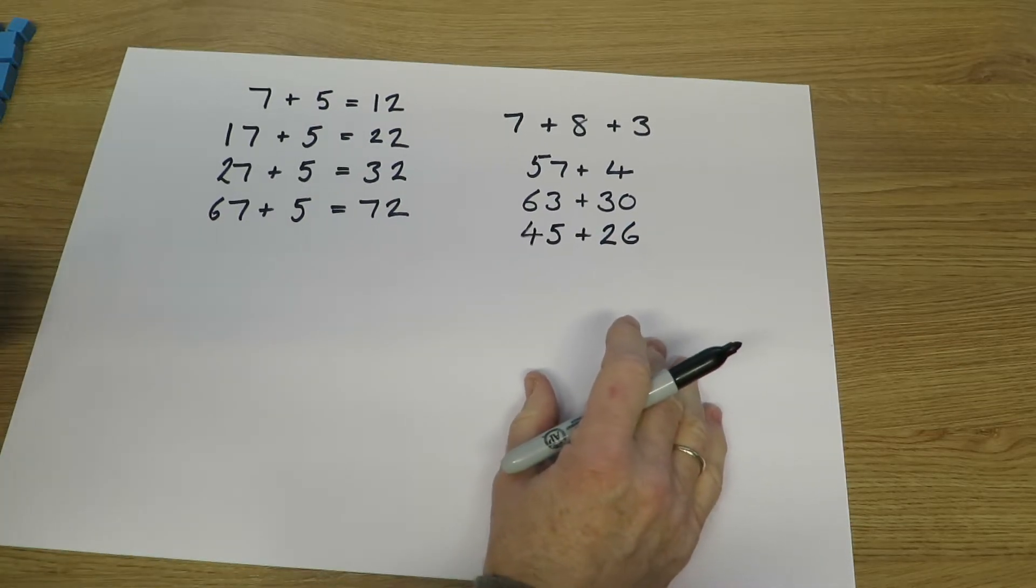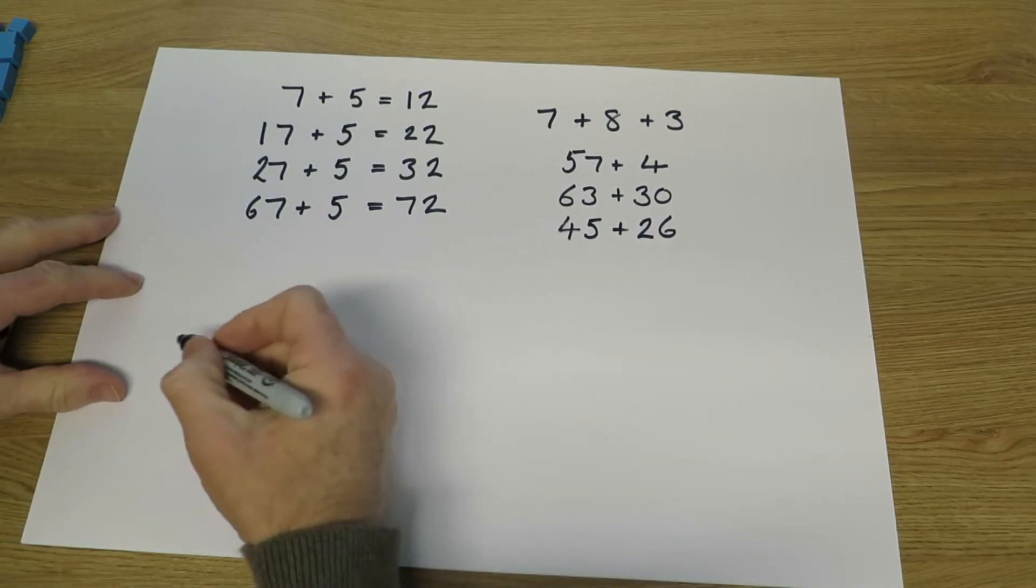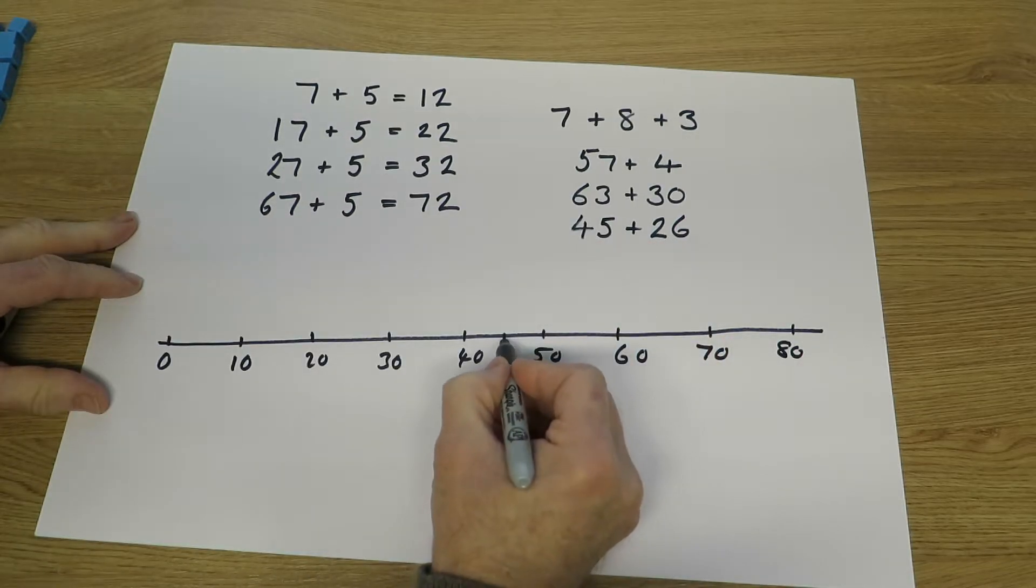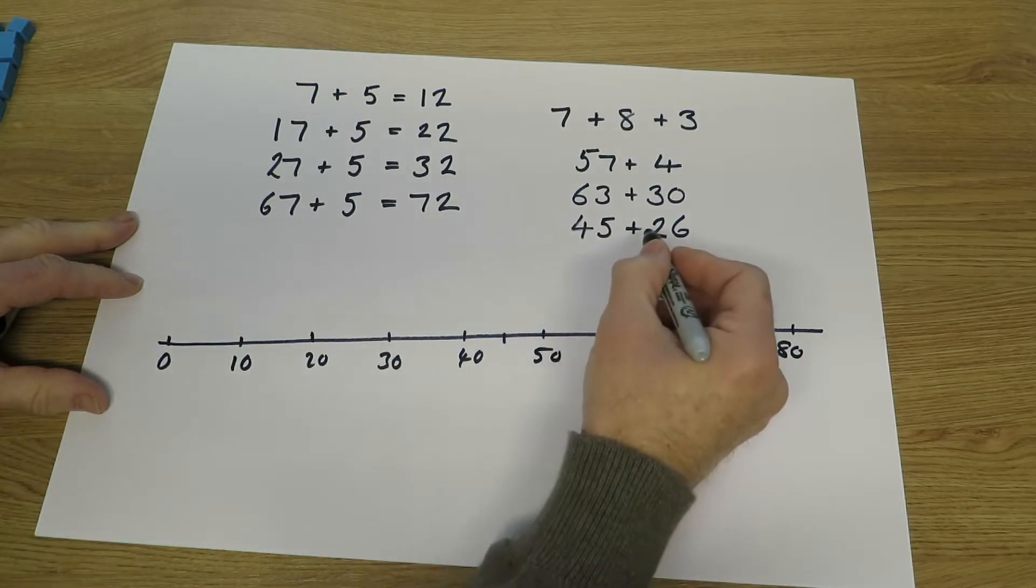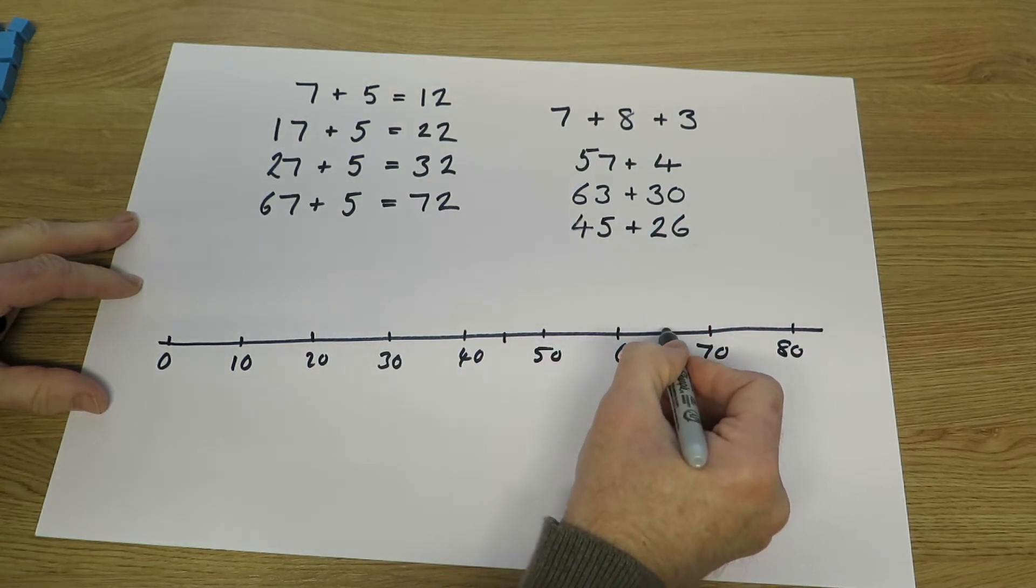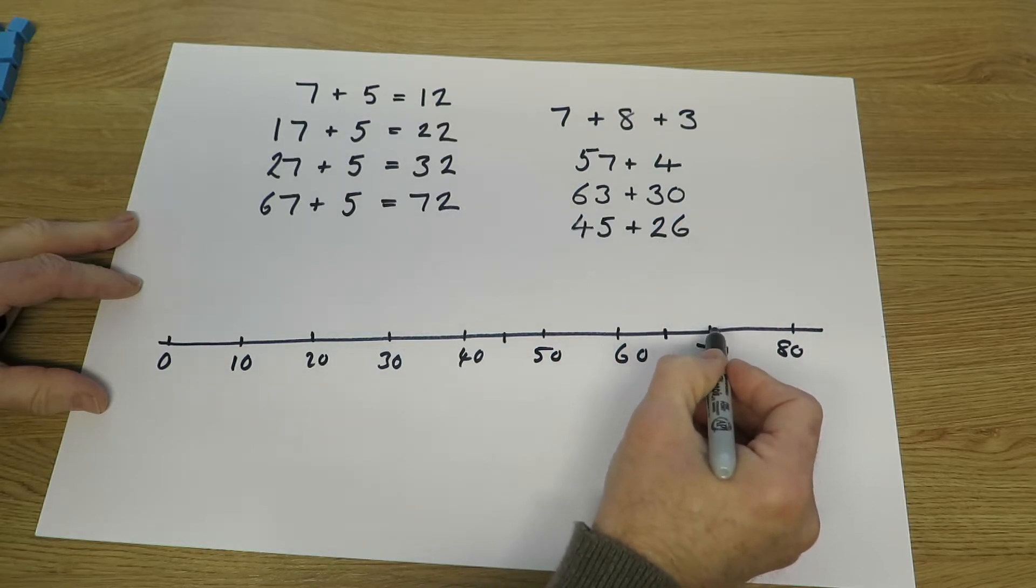For some questions they may find it helpful to use number lines and they should be learning to sketch their own. Starting at 45, they can find that there's 45. We're adding 26, so add 10, add 20 gets us to 65, and then count on the 6 to find the answer 71.